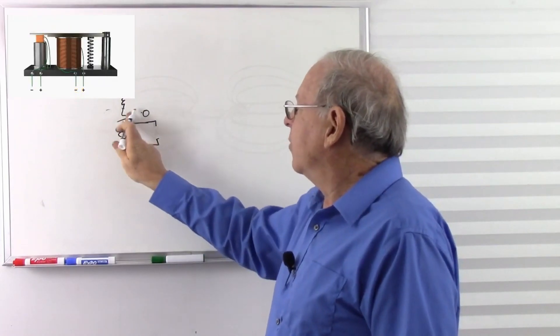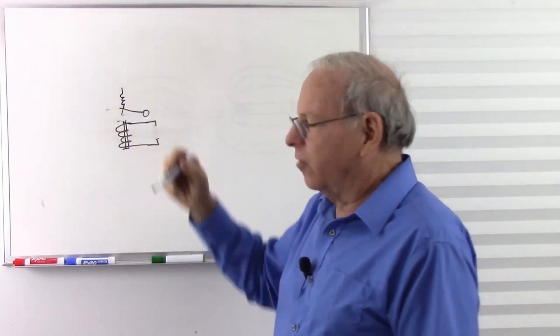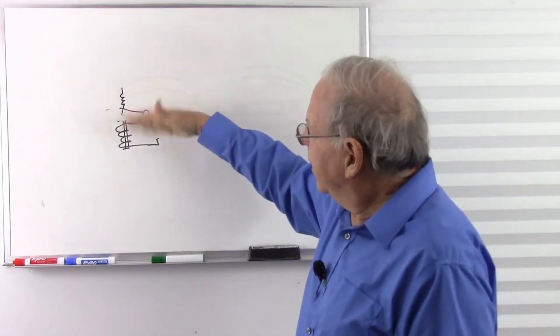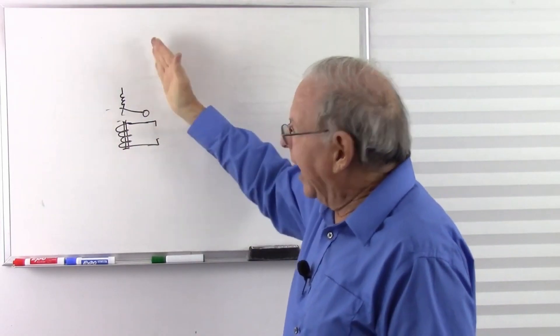De-energize it. And it's going to let go and go back up. So the spring is going to pull it back up and down. So that's one kind of a hinged actuator.